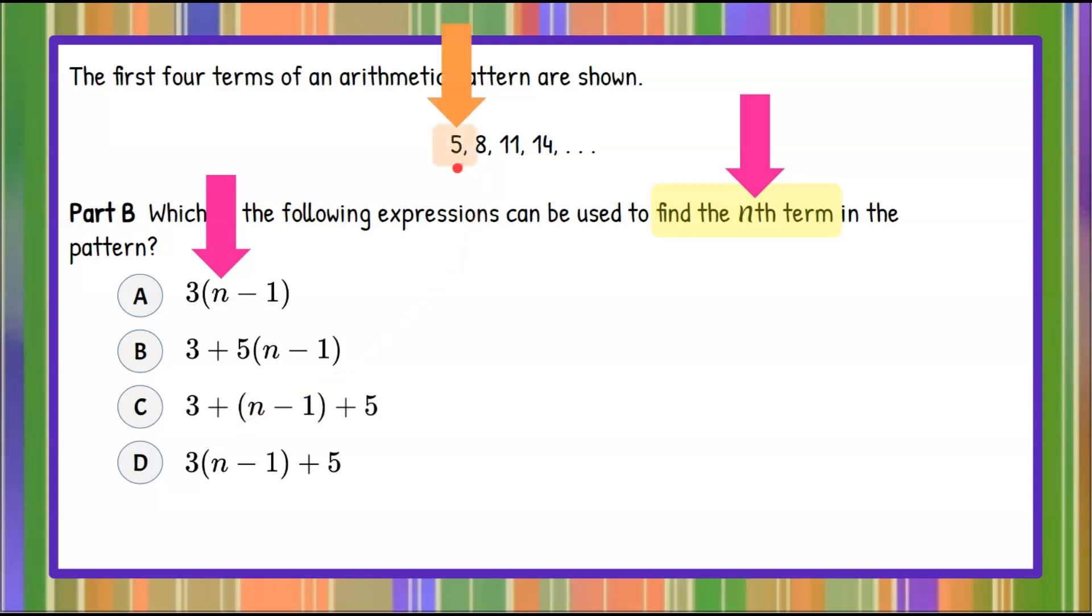If we look at the first term, term 1, it's 5. So if we replace n with 1, then this expression needs to simplify to 5. I'm picking term 1 because it's the smallest number and easiest to work with in my mind. So let's do that.